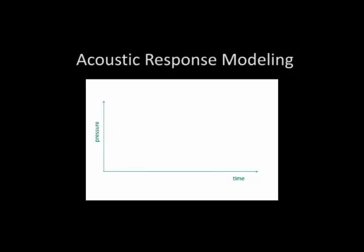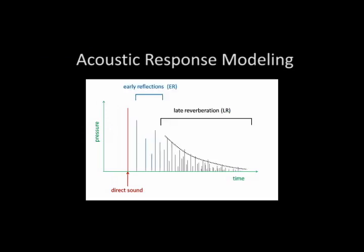A scene's acoustic response can be divided into three parts: the direct path, the early reflections, and the late reverberation. Next, we show the perceptual effect of these different parts.